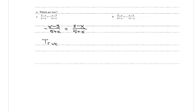In B, we have 3 minus x divided by 5 plus x, equal to negative x minus 3 divided by negative 5 minus x. Both the numerator and denominator differ in sign from the left side to the right. With only one negative sign, we can only change one of them. When we multiply the negative through the numerator, we get 3 minus x divided by negative 5 minus x. The numerators are the same but the denominators differ, so B is false.